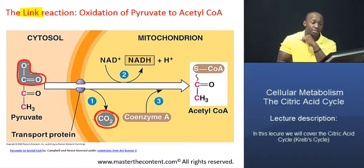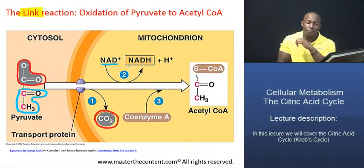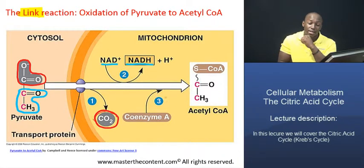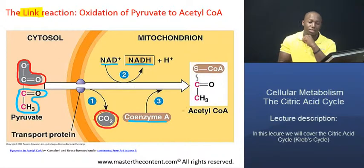In the second step, the remaining two-carbon fragment — after the decarboxylation reaction — is then oxidized. That oxidation reduces NAD+, which is nicotinamide adenine dinucleotide, to its reduced form, NADH. Then in the third step, the resultant fragment after oxidation is attached to coenzyme A, and that attachment is what produces our final product, which is acetyl coenzyme A.